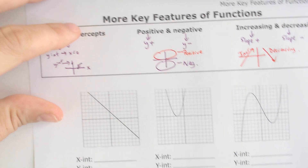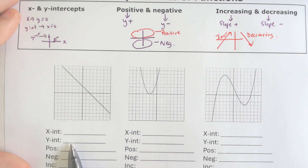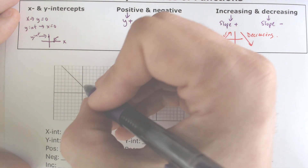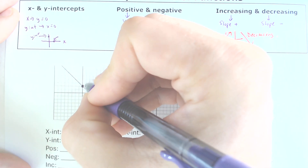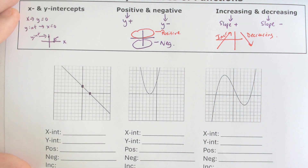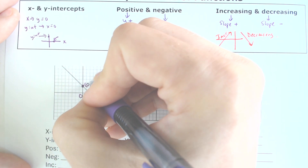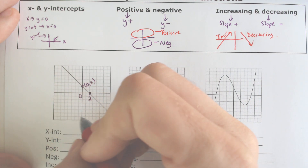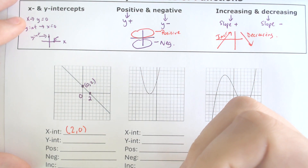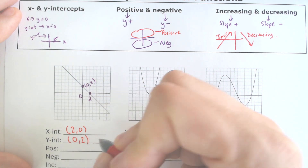Let's do some examples. We have this first problem — essentially a line — where we need to find the x-intercept, y-intercept, positive/negative, and increasing/decreasing. My y-intercept and x-intercept both happen to be at 2. So the x-intercept is at (2, 0) because the x-intercept occurs when y equals 0, and the y-intercept would be at (0, 2).